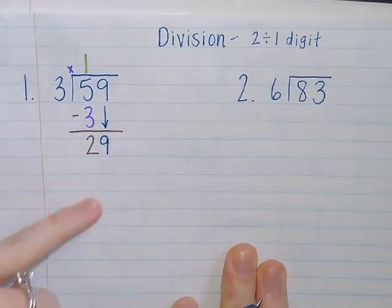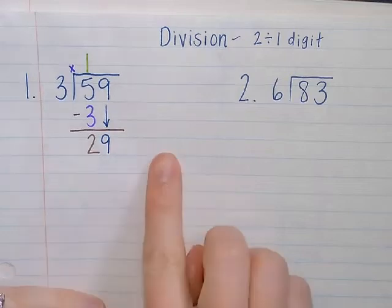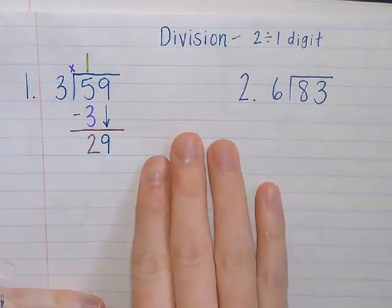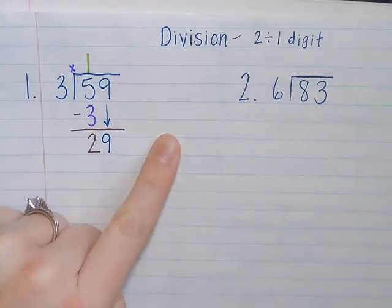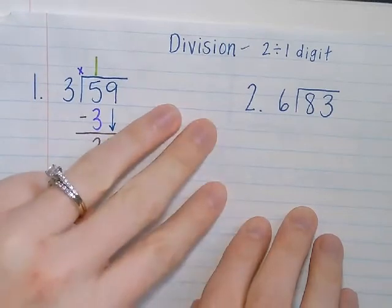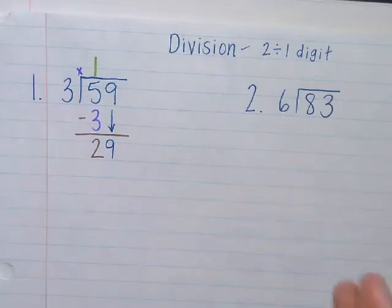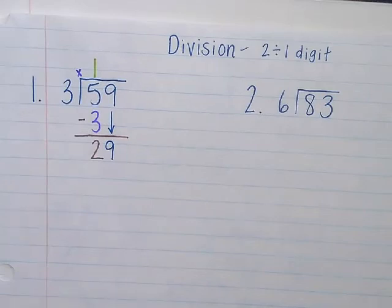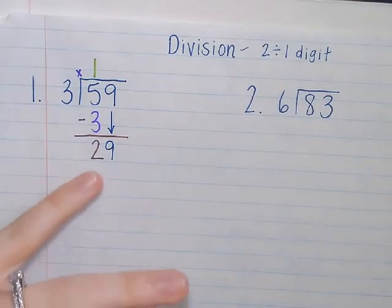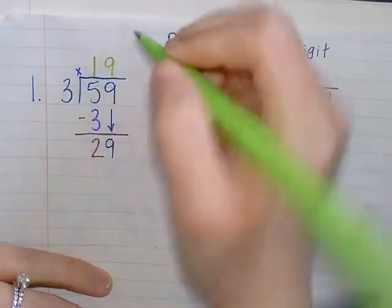How many groups of three can I make out of 29? Again, I go back to my multiples of three and I count: three, six, nine, twelve, fifteen, eighteen, twenty-one, twenty-four, twenty-seven, thirty. So I counted up ten times by three and I got to thirty, but that's too much. So I need to go back one, and I know that I can make nine equal groups out of 29. So that nine goes right above the 29.